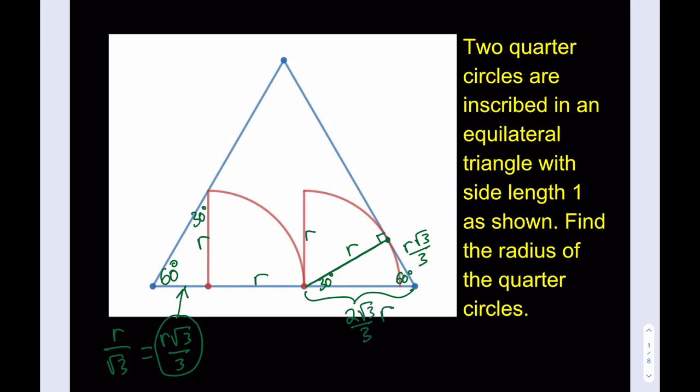I could write this as root 3 over 3R, same thing. Now what do we know? We know that this length is R root 3 over 3, this length is R here, and this piece is 2 times square root of 3 over 3 times R.